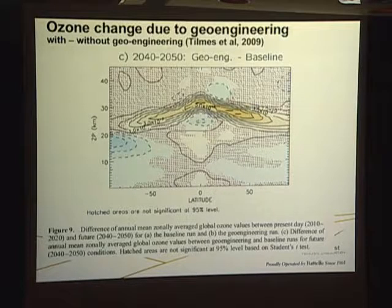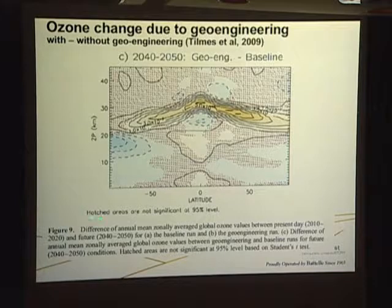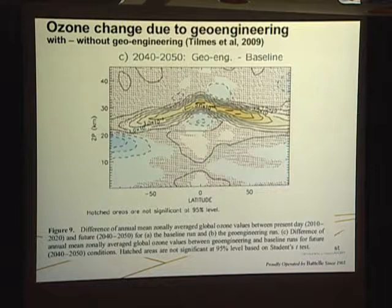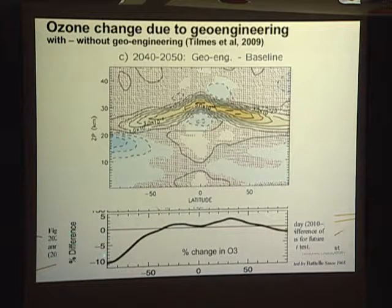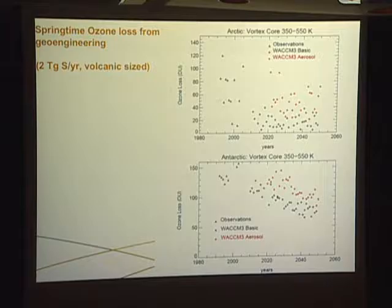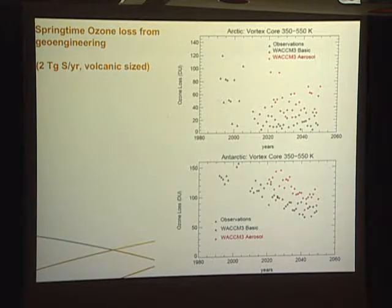There are also consequences to ozone. Simona Tilmas and I were co-authors on a paper evaluating changes in ozone. In some parts of the atmosphere there's actually more ozone being produced than you would get without the geoengineering aerosols. But if one looks at the column burdens, then for much of the planet — particularly in the high latitudes — there is less ozone.